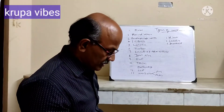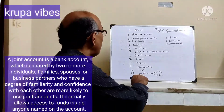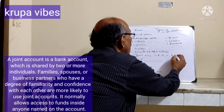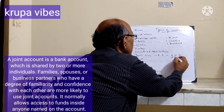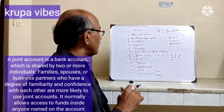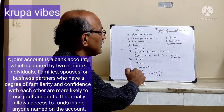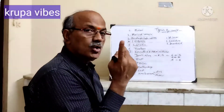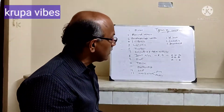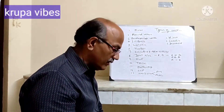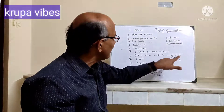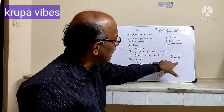For joint accounts, it can be operated by A and B in various types: A or B (either can sign), A and B (both must sign together), or A then B — also called 'former or survivor' — where as long as A is alive A signs, and after that B signs. In case of death in the 'A or B' arrangement: after A dies B takes it, or if B dies A takes it.